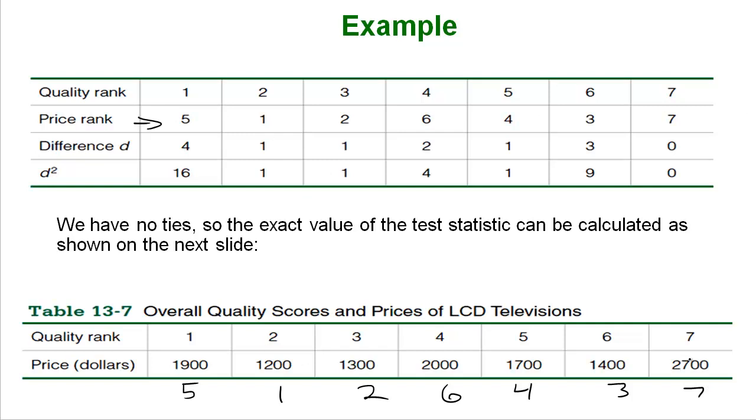And we didn't have any ties. And by ties it would mean like if these were both 1300. If these were both 1300 you would still do one and two and then we would deal with the ties accordingly. Now that we have our two ranks we calculate the difference simply just this one minus this one. This one minus this one you'll notice that they're always positive. You always do positive differences. 3 minus 2, 6 minus 4, et cetera. There's all your differences. Then you square them.